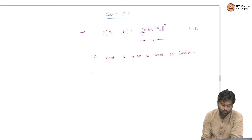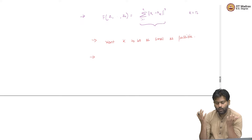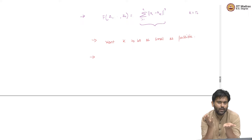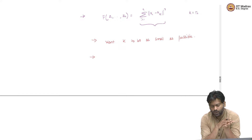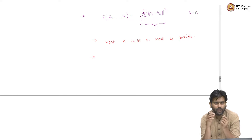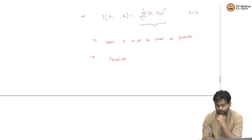We want K to be small. How can we do this? One way would be to run the algorithm for multiple Ks, but there are two different things to measure. One is: if I run the algorithm with a specific K, I get a partition as the output. What is the objective value for this partition? That is something I can measure, but that is not just enough. I do not want larger Ks — I want smaller Ks. Which means we also want to measure how big K is. In other words, we need to somehow penalize large values of K.